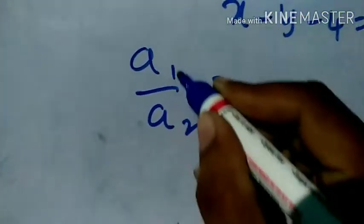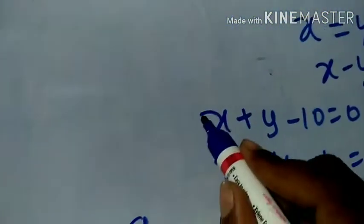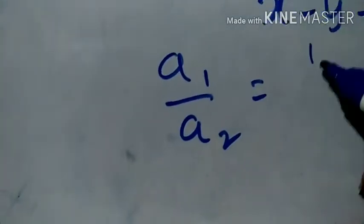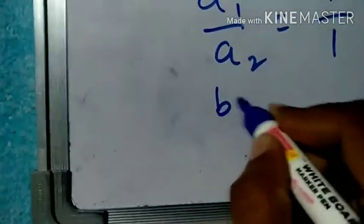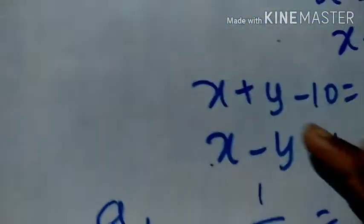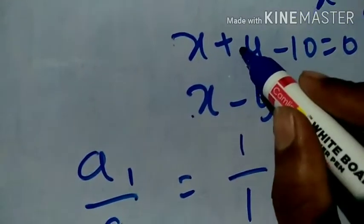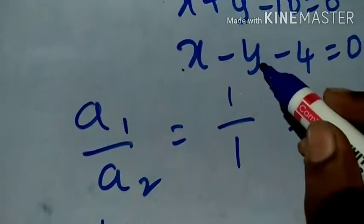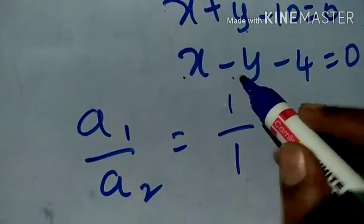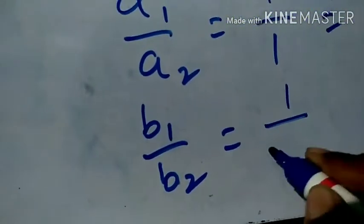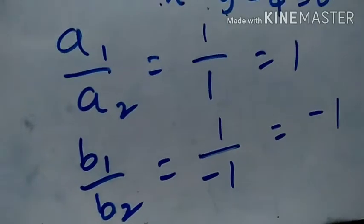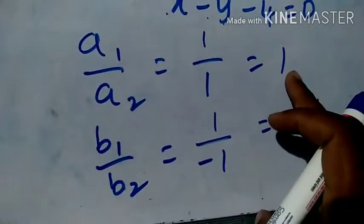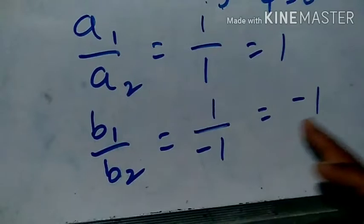Now find a1 by a2, b1 by b2, and c1 by c2. a1 by a2: the coefficient of x is 1 in both equations, so 1 by 1 equals 1. Next, b1 by b2: b1 is the coefficient of y in the first equation, which is 1; b2 is the coefficient of y in the second equation, which is minus 1. So b1 by b2 equals 1 by minus 1, which is minus 1.